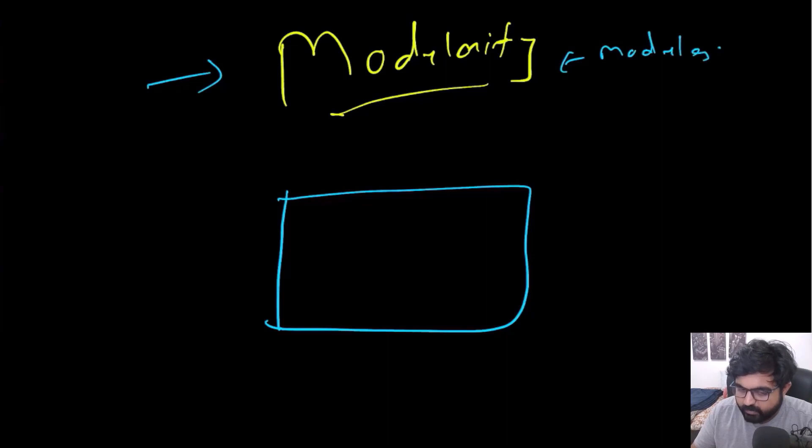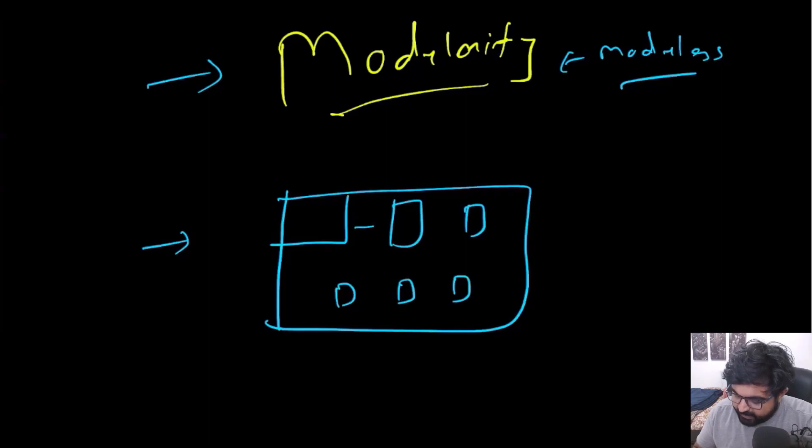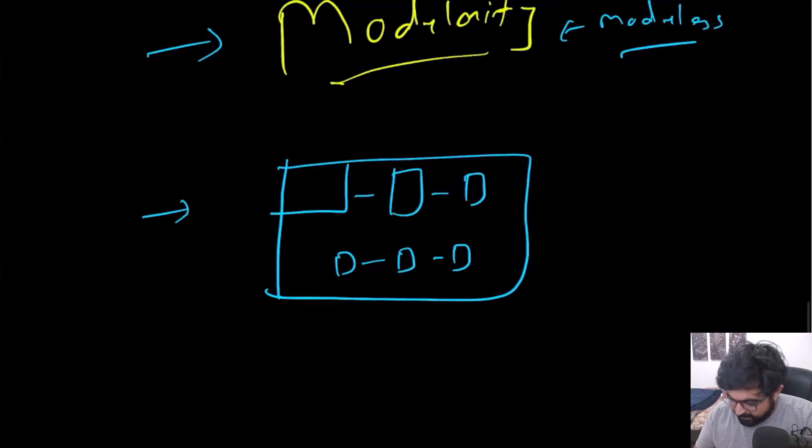If you want to understand the definition of what modularity means, modularity typically refers to a tech design technique where you break down the system into smaller and smaller fragments and have those fragments talk with each other, rather than having just one huge big machine or system that deals with every single thing. What that in turn means is that every single component is tasked to do some different functionality, and that functionality is independent of other modules.